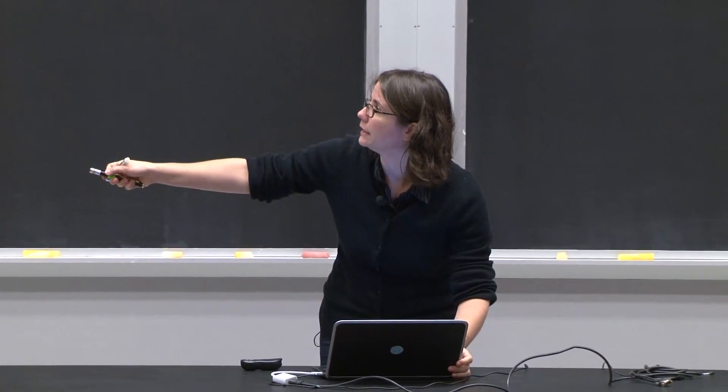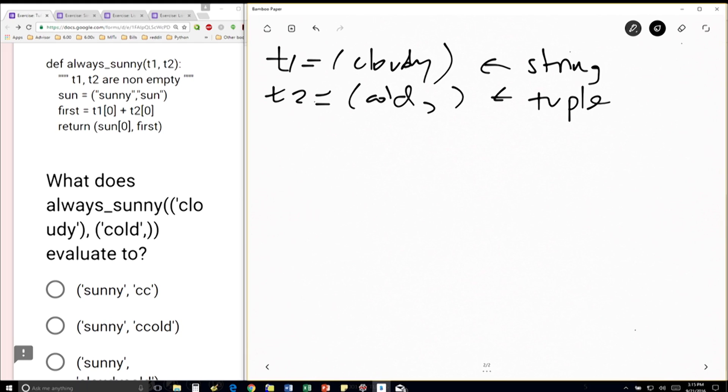So I've made my function call and I've assigned t1 and t2 to be those two values. The next line is sun is equal to sunny, comma, sun. So sun is going to be this tuple of two strings. The next line is figuring out what first is. So first is going to be, so I'm looking at my t1 here. It's a string.